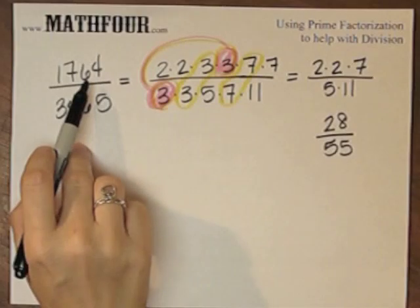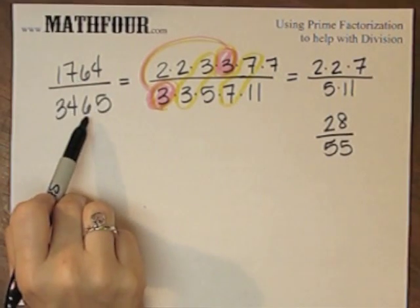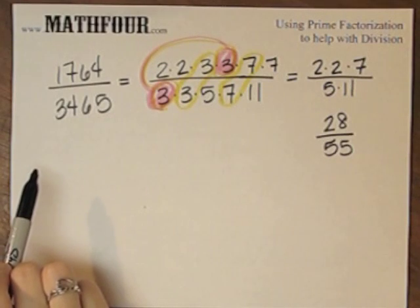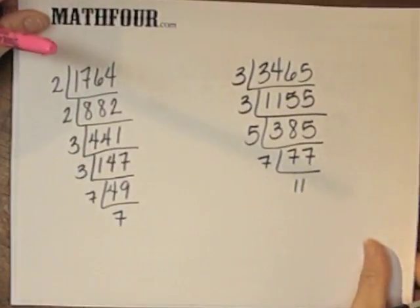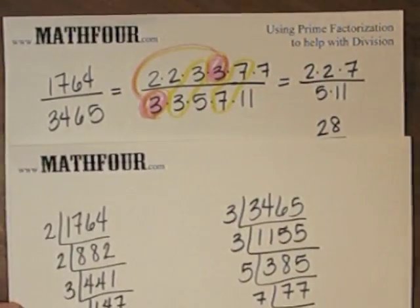Again, taking each one of these and saying, OK, I'm going to divide 3 into this one and 3 into this one and reduce that way is going to be a lot more of a pain than just stretching it out with the factorization and seeing how nice it can work.